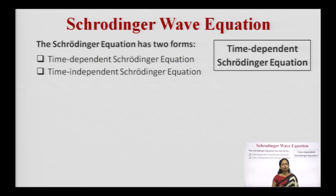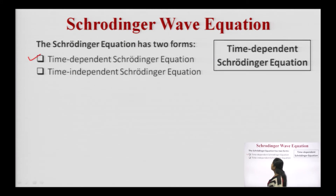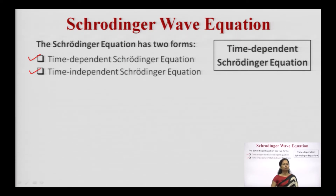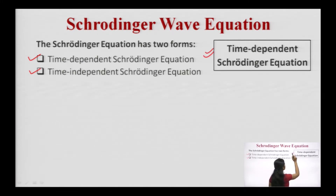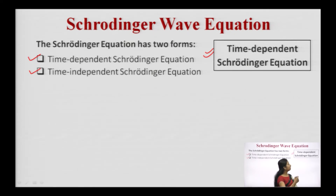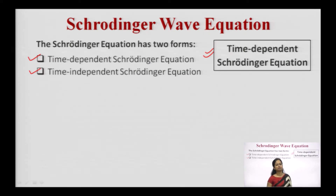There are two forms of the Schrödinger wave equation: the time dependent Schrödinger wave equation and the time independent Schrödinger wave equation. Both have importance in various applications and fields, but in this lecture we will derive the time dependent Schrödinger wave equation. Note down each and every point in a systematic manner.